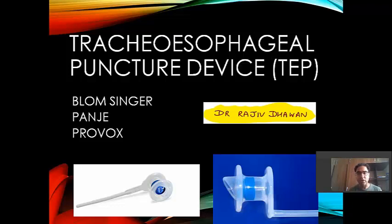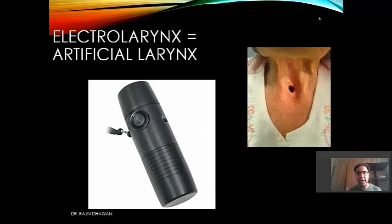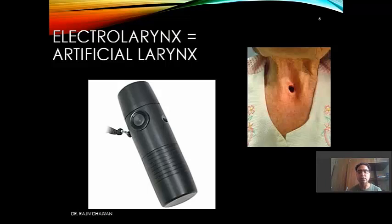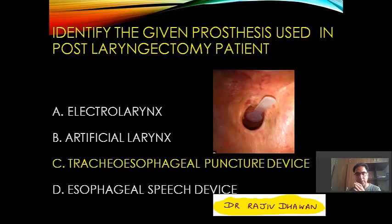There are many types of TEP devices available. The more common ones are Blom-Singer prosthesis, Pangea prosthesis, and Provox prosthesis. Regarding the other choices: A and B — electro larynx and artificial larynx — are one and the same thing. This device is also used for producing sound after total laryngectomy, but it is an external device. It is a battery-operated handheld vibrator which you touch just below your mandible in the floor of the mouth area, conveying vibration to produce sound. So the correct answer is the tracheoesophageal puncture device.